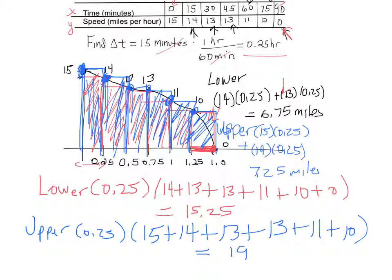Continuing the upper estimate: plus 11 plus 10, and you should get 19 miles for the upper estimate. It's important when doing these not to just look at the table and guess which values to use — you want to graph it. If you don't know which is the upper or lower, compute both: the smaller value will be the lower estimate and the larger value will be the upper estimate.